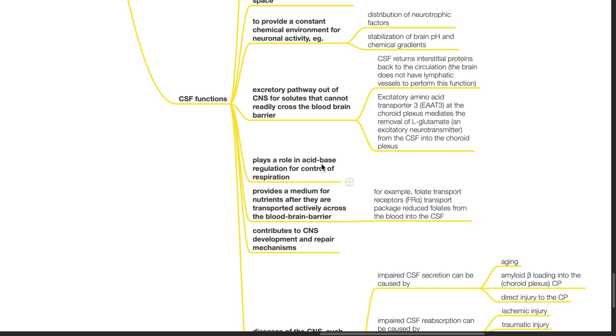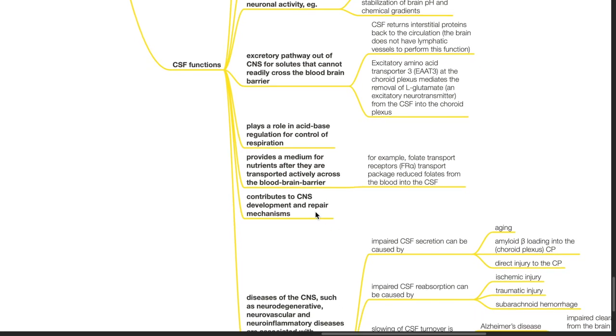CSF plays a role in acid-base regulation for control of respiration. CSF also provides a medium for nutrients after they are transported actively across the blood-brain barrier. For example, folate transport receptors transport packaged-reduced folates from the blood into the CSF.